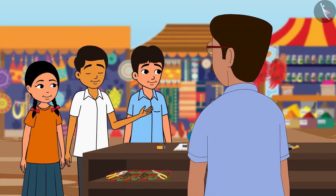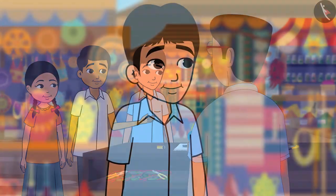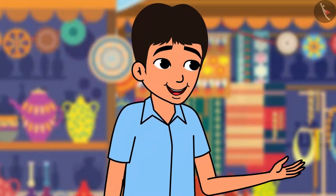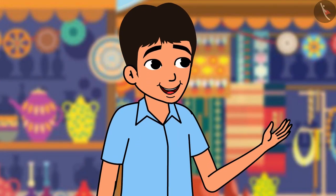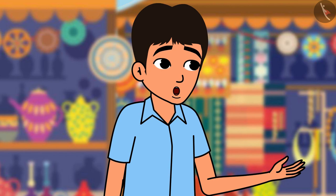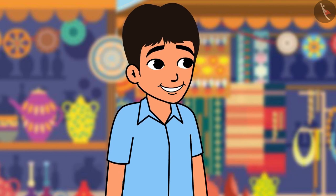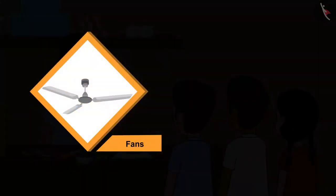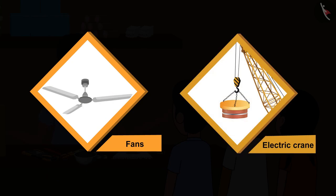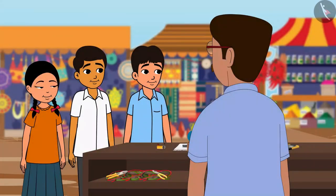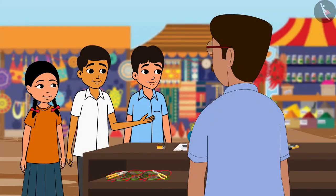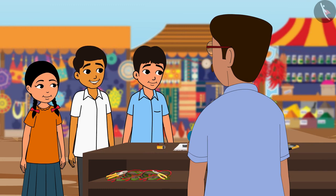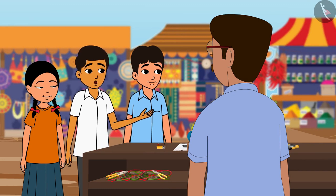Oh, now I have understood. Father, which other electrical equipments work on this principle of magnetic effect of electricity? Many appliances or equipments like fans, electric motors, electrical cranes. Oh, the crane that was working in the junkyard was working on the principle of the magnetic effect of electricity.